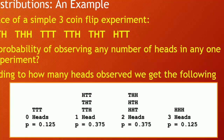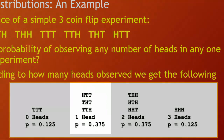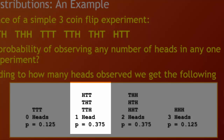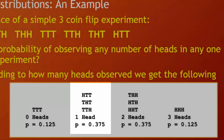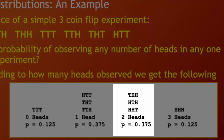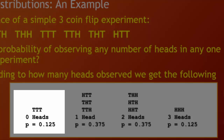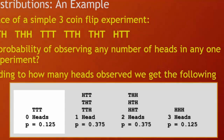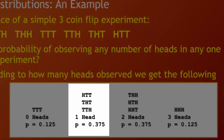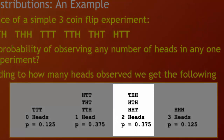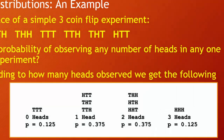There are three different possibilities that produce each of two heads or two tails. For example, the three ways to observe one head are: head-tail-tail, tail-head-tail, and tail-tail-head. Similarly, there are three ways to observe two heads. These eight different outcomes have associated probabilities: one of the eight outcomes produces three tails, so 1/8 equals 0.125. There's a 0.375 probability of observing one head, a 0.375 probability of observing two heads, and a 0.125 probability of observing three heads.